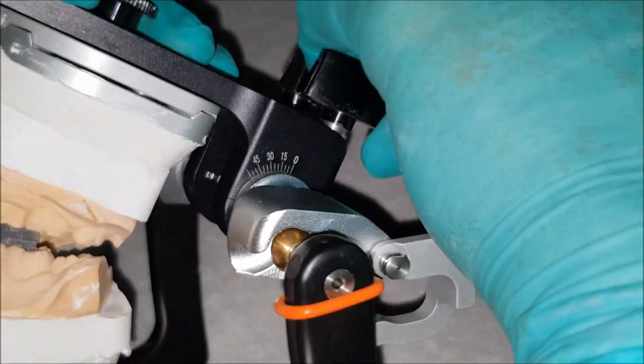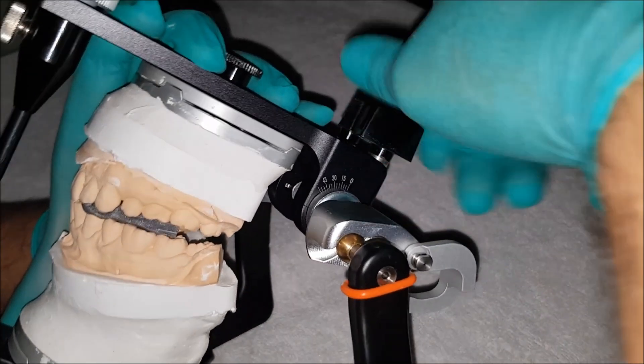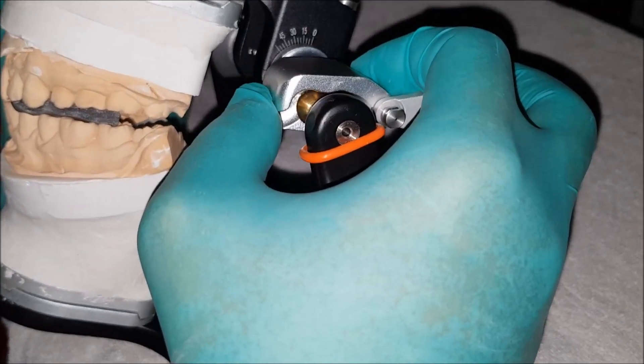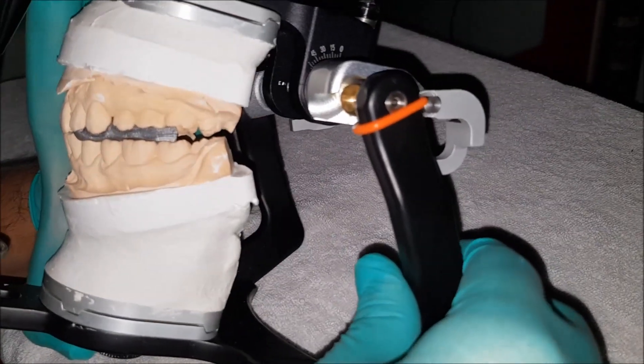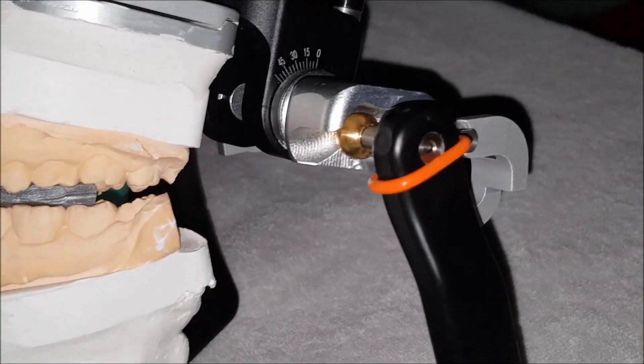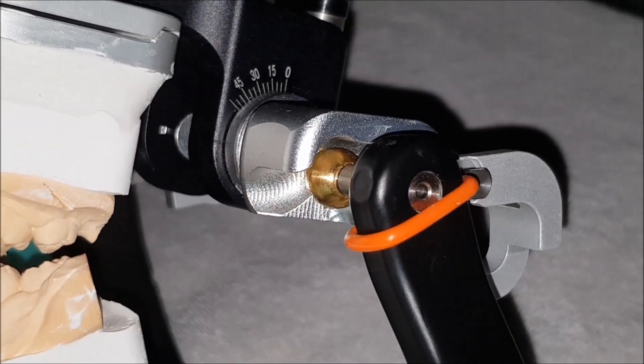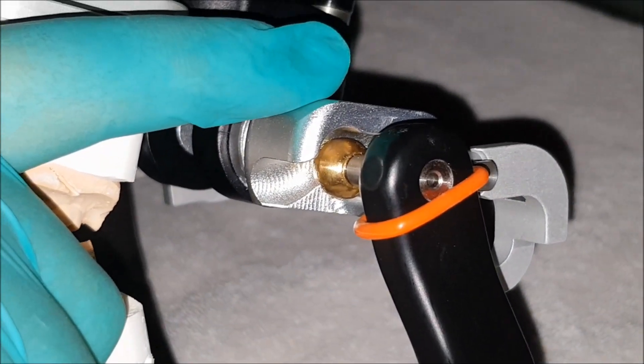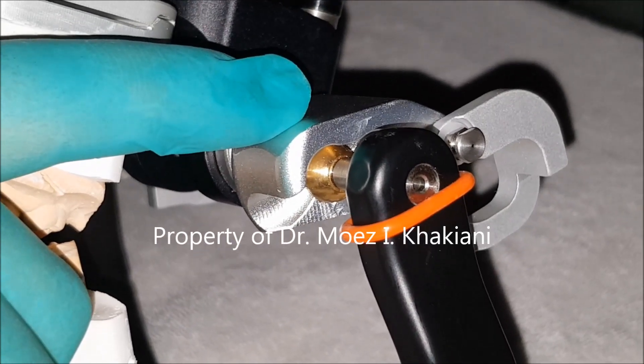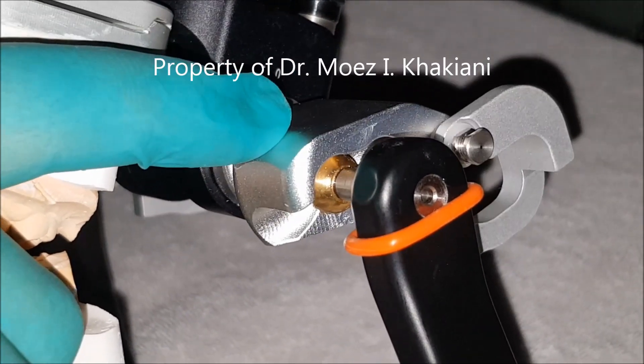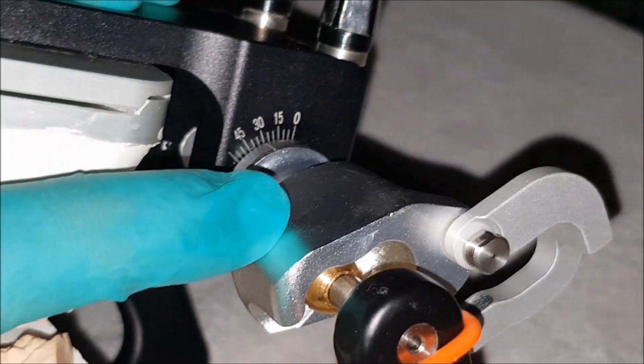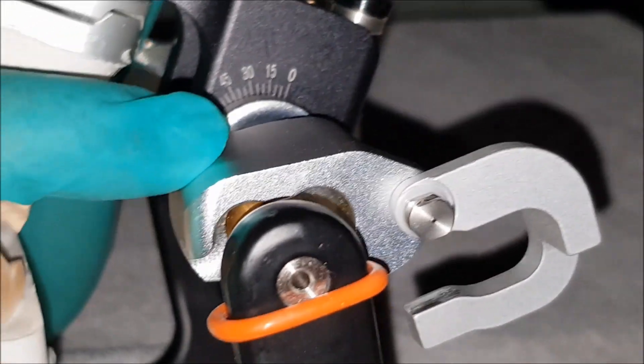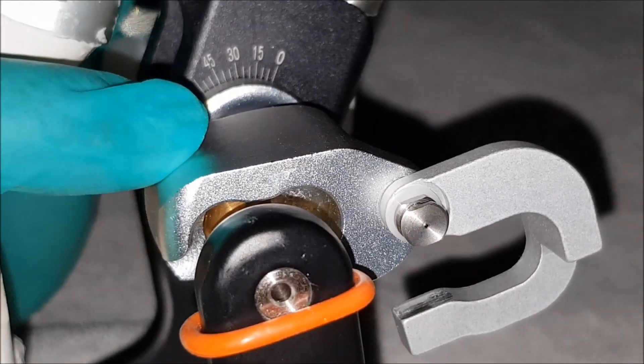Now, when I open this condylar lock, I will be able to change the condylar guidance angle of the articulator. As I open, you can appreciate I can change the angle from here. Let's zoom in and look closely. The ball is not touching the glenoid fossa at this time. However, when I put my finger here and gently push this down, at one point the ball comes and touches the fossa. The point at which the ball touches the fossa is the horizontal condylar guidance angle of the patient on that side. Here, as you can see, the H value of the patient is 30 degrees.